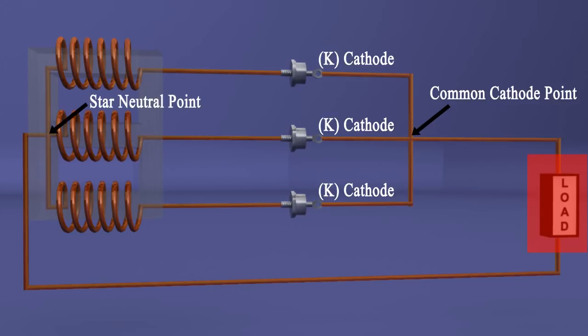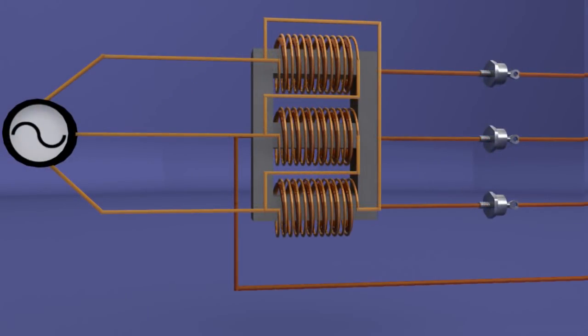Here in this example, the primary winding is delta connected. When three-phase voltage is given to the primary winding, three-phase current gets set up in the winding.